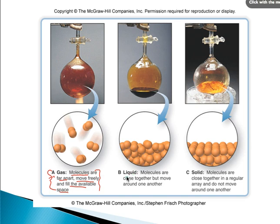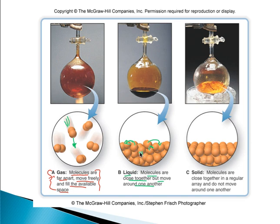For the next state of matter — liquids. Molecules are close together, but they move around one another. There are some attractive forces that keep these together, but not enough to stop that movement. If I was going to draw movement, I can either use a swoosh or an arrow. Using arrows with curly things represents that they're kind of moving over each other.